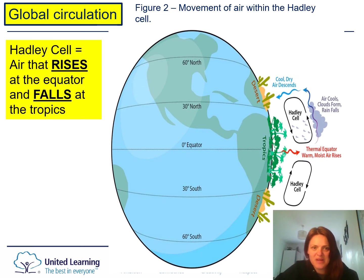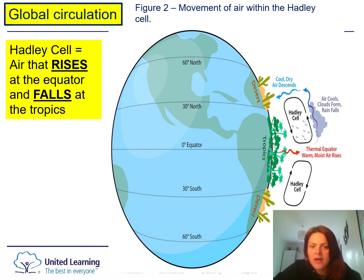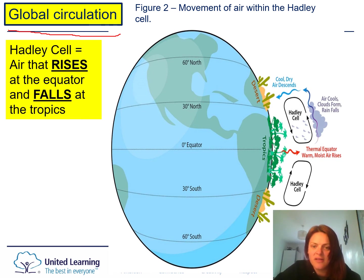What we're going to look at today is how we've got different climates around our world and, more importantly, why we have different biomes in different places on our planet. It's all to do with how our air circulates around the globe — we call it global circulation. That air movement determines what sort of climates we're going to have. We're going to look at a Hadley cell — you've got two of them just north and south of the equator.